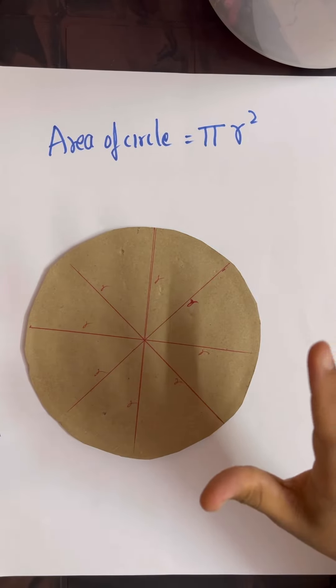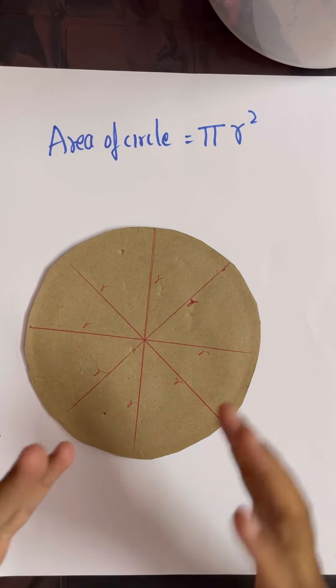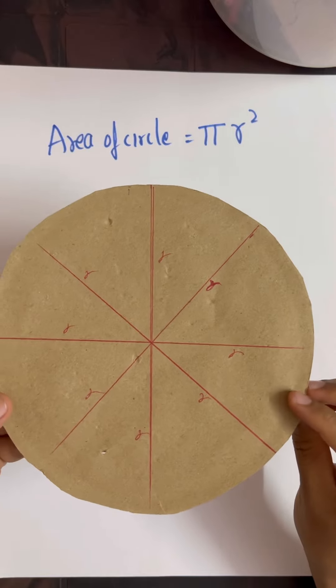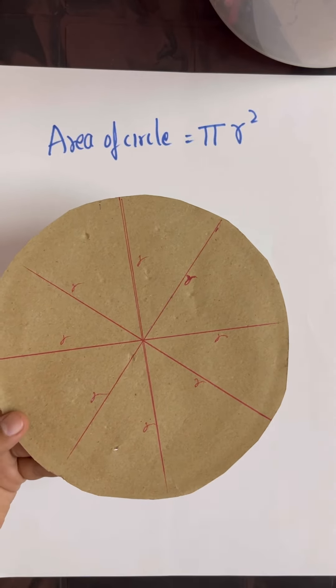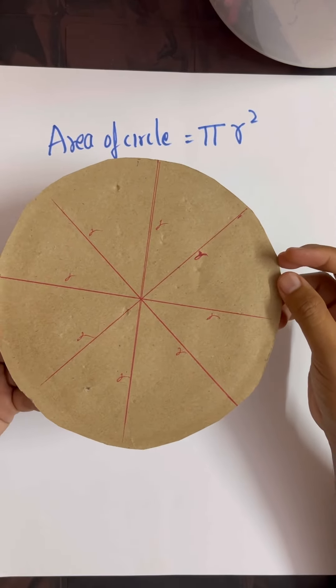We all know the area of a circle is πr². So how do we understand this? How is this formula derived? Let me take a circle. In this circle, I have divided it into several sectors.